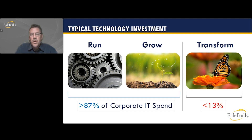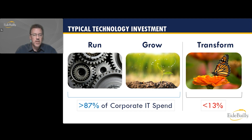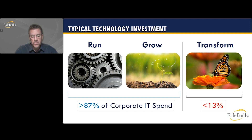The run category is everything involved with operating and maintaining the current business. You'll usually hear this referred to as business as usual, keeping the lights on, or sustaining IT spending. These are expenses that don't directly increase the company's revenue or achieve any new business goals, but they do maintain essential functions and deliver IT efficiency at the appropriate quality and price for performance.